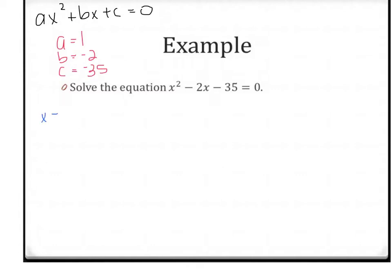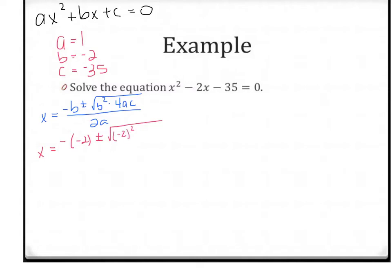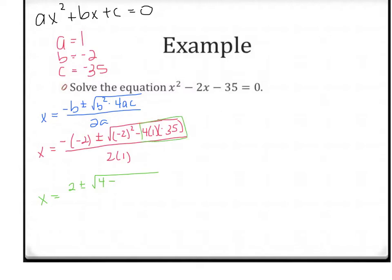I'm going to write out my quadratic formula. If you don't have it memorized, writing it out on every example and every problem is the fastest way to get that memorized. So we're going to plug in our numbers. We have a negative sign, then we put in b which is negative 2, plus or minus the square root — and negative 2 needs to be in parentheses because that's how you'll square it correctly — minus 4 times a times c, all over 2 times a. A negative negative becomes a positive 2, plus or minus the square root. Negative 2 squared is a positive 4, minus — multiplying those three numbers together — 4 times 1 is 4, times negative 35 is negative 140, all over 2.